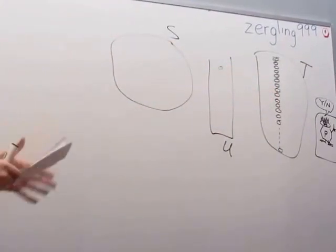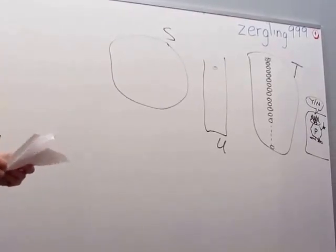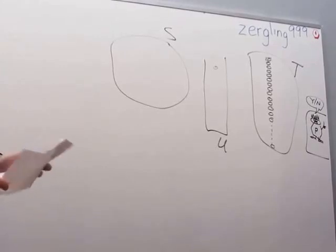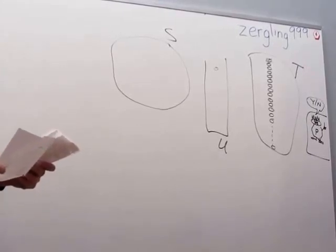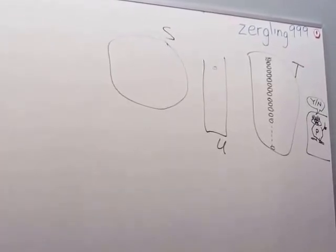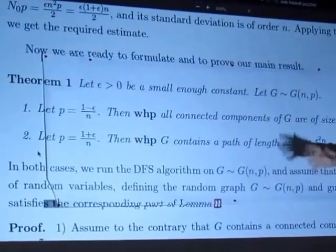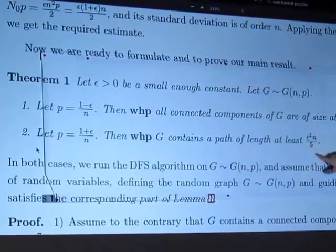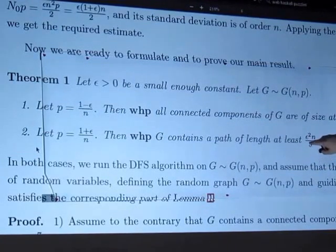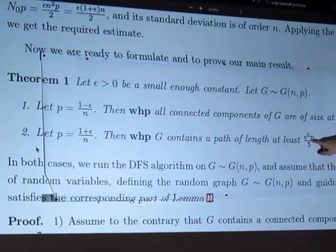Then we move on to the next connected component — we start with the first thing in T that has not been removed, and continue from there. The connected components appear in this algorithm in what they call 'epochs' in the paper. You start a connected component, finish it completely, the stack is empty, you move one node on, and do the next connected component until the stack is empty again. I'm going to do the large component case first because it has more pictures.